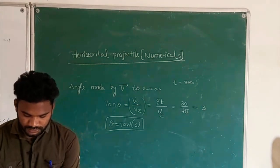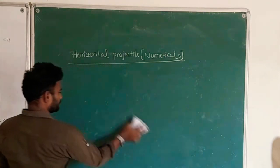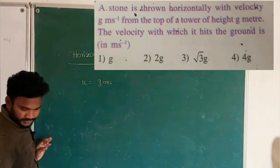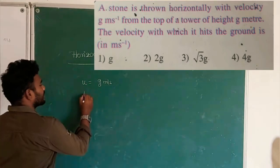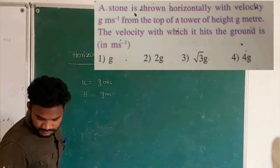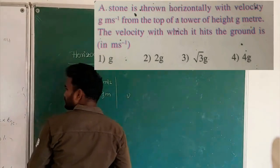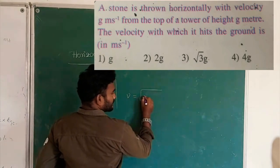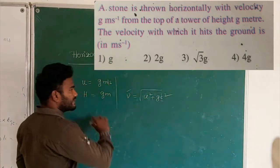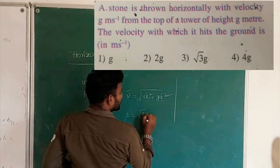Next problem: a stone is thrown horizontally with velocity U = g m/s from the top of a tower of height H = g meters. We need to find the velocity when it hits the ground. First, find the time of descent using T = √(2H/G). Substituting H = g: T = √(2g/g) = √2 seconds.